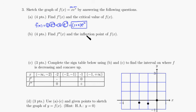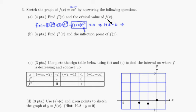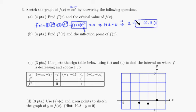Then we want to find the critical value, so we set that equal to 0. You can see that e to the x is never 0 — in fact it's always positive — so the only way to get 0 is if 1 plus x equals 0. Subtracting 1 from both sides, x must be negative 1. So this is the critical number.